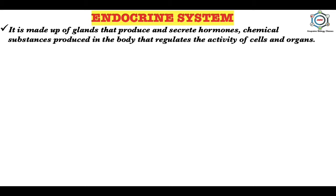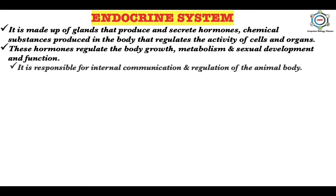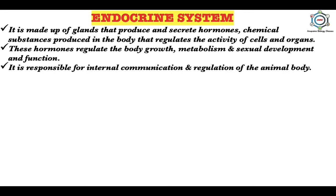The endocrine system is made up of glands that produce and secrete hormones, which are chemical substances produced in the body that regulate the activity of cells and organs. These hormones regulate body growth, metabolism, and sexual development and function. Like the nervous system, it is also meant for the internal communication and regulation of the animal body. Many important functions of the endocrine system are under the control of the nervous system, so these two systems together are also known as the neuro-endocrine system.